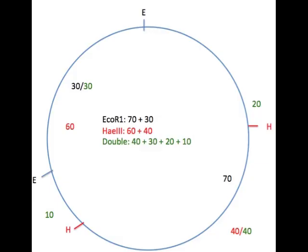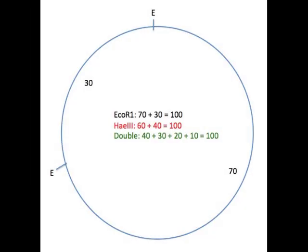In summary, starting at 12 o'clock with our EcoR1 digest, we have 70 and 30 kilobase fragments. Then, starting at the first HAE3 cut, we have 40 and 60 kilobase fragments. And, going clockwise with the double digest, we have 20, 40, 10, and 30 kilobase fragments. I think we've solved the problem. There is another solution to this problem that makes only one cut in the larger 70 kilobase fragment and a second cut in the smaller 30 kilobase EcoR1 fragment. See if you can figure it out.